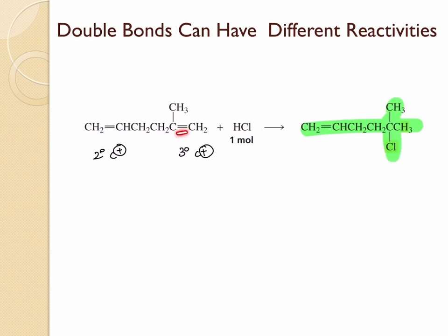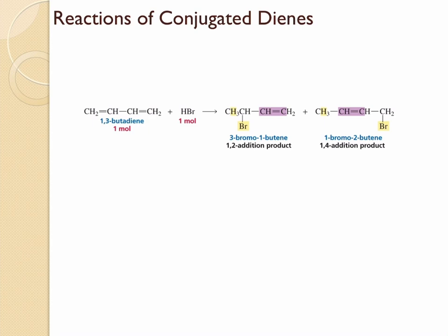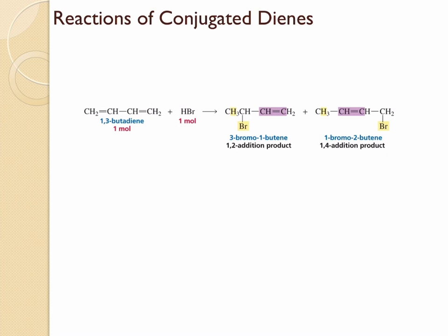When conjugated dienes react with one equivalent of electrophilic reagent, they have the possibility to give two products: the 1,2-addition product, which is what we normally see in alkenes and isolated dienes, and the 1,4-addition product, which comes as a surprise. In 1,2-addition, the two groups in the electrophilic addition reaction are added to adjacent carbons — for example, hydrogen added to the first carbon and bromine to the second carbon, i.e., the first and second positions respectively.